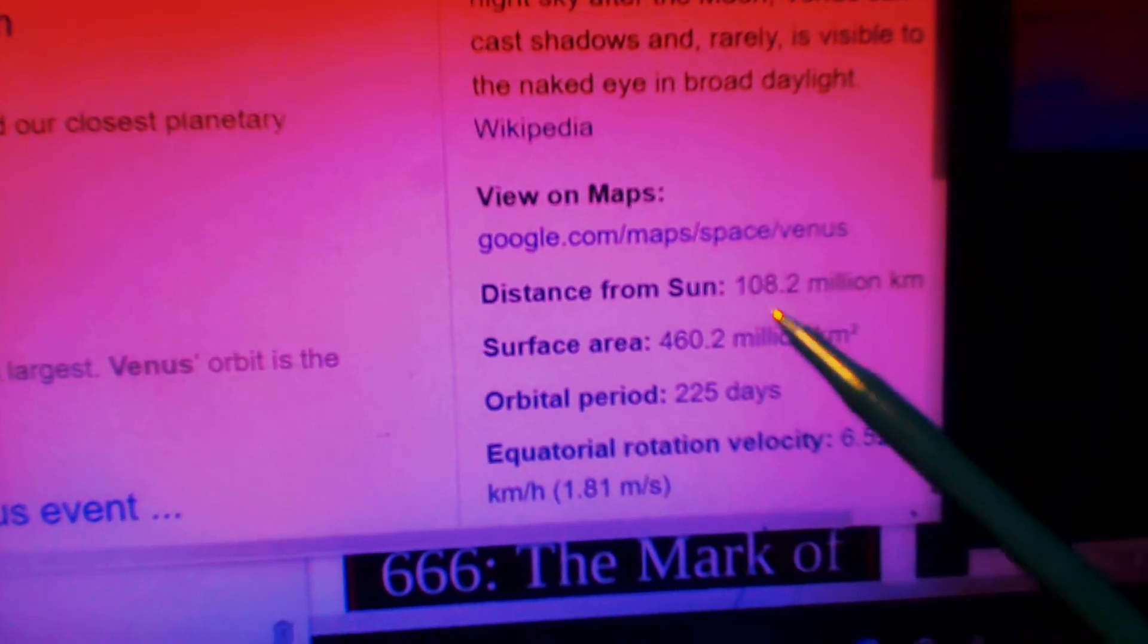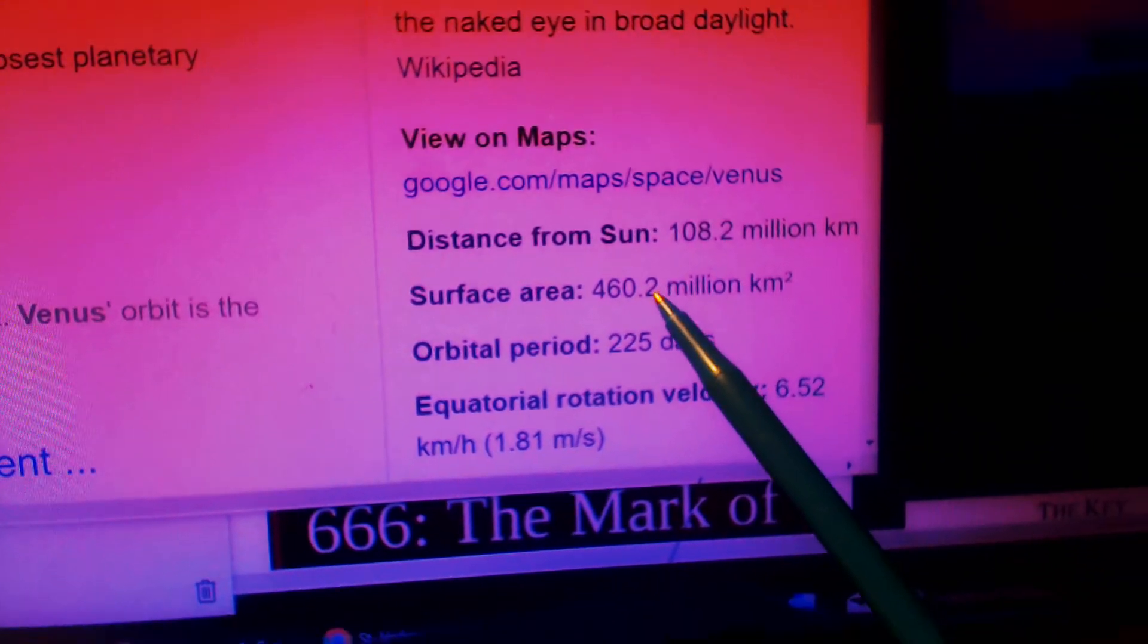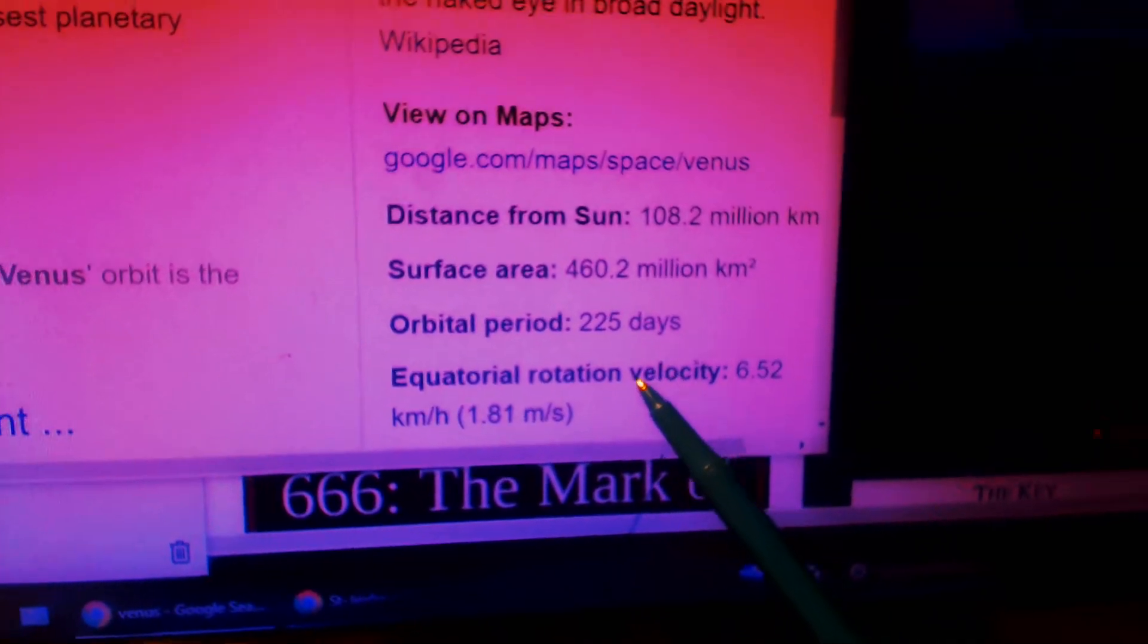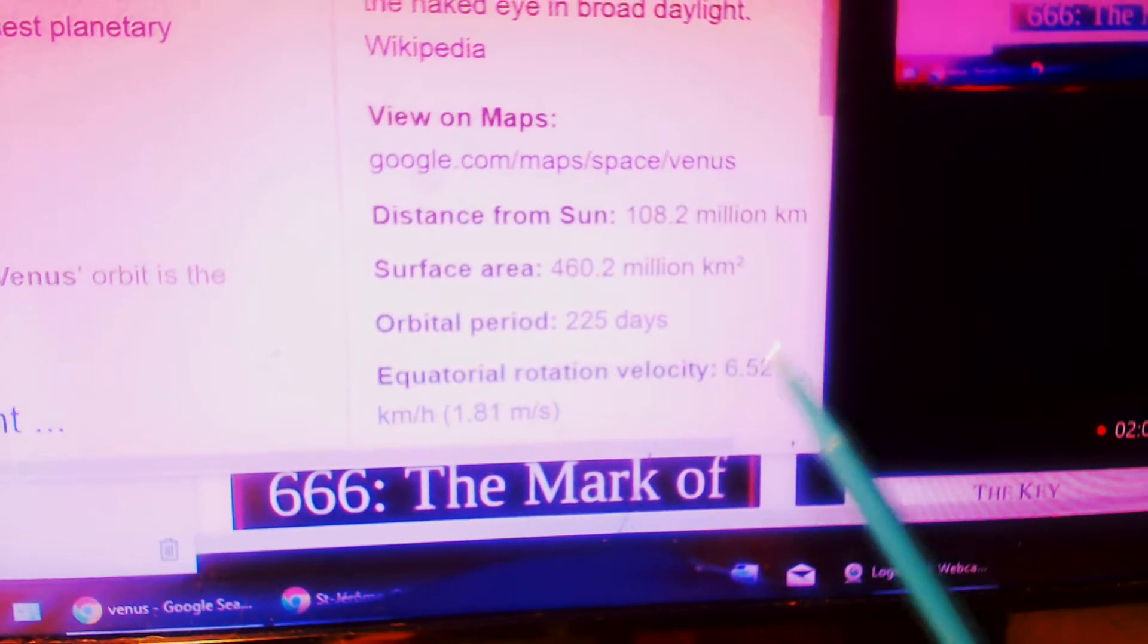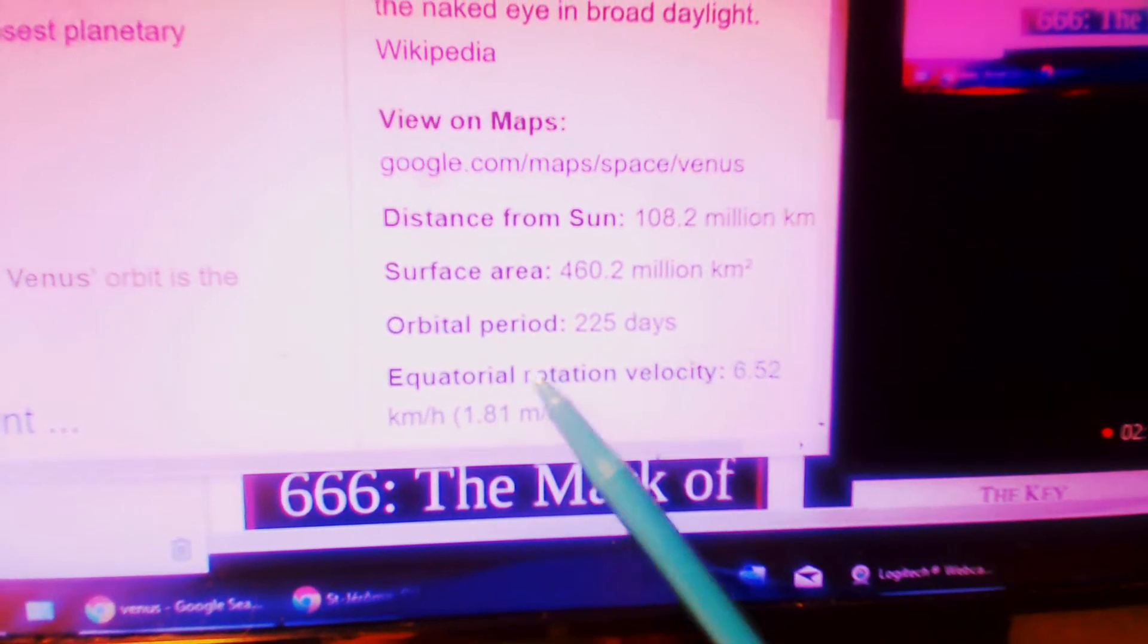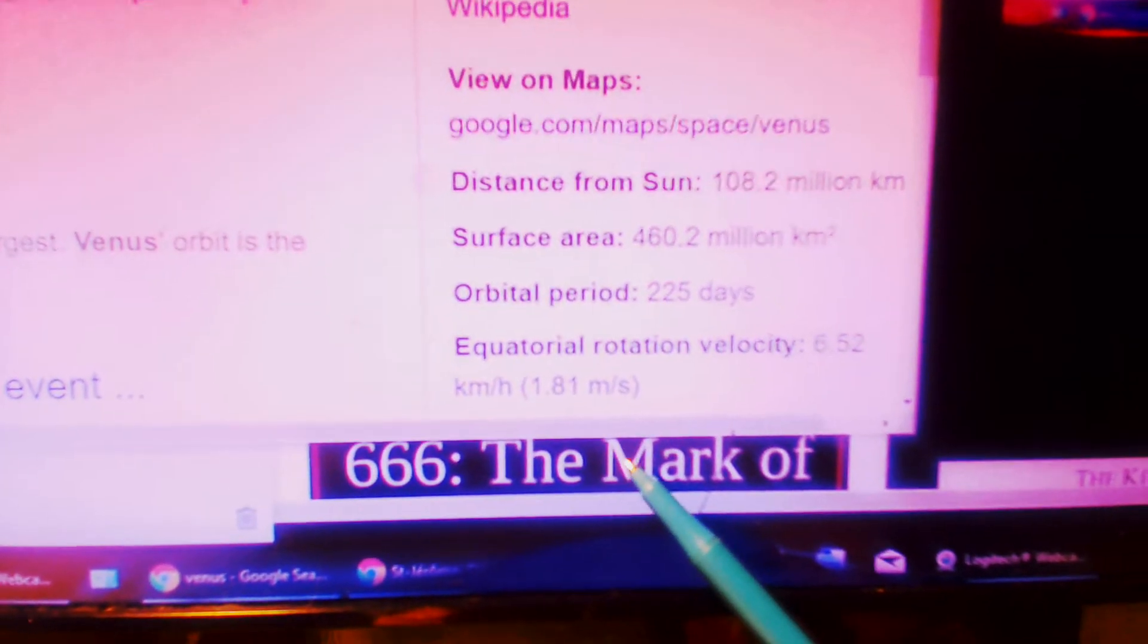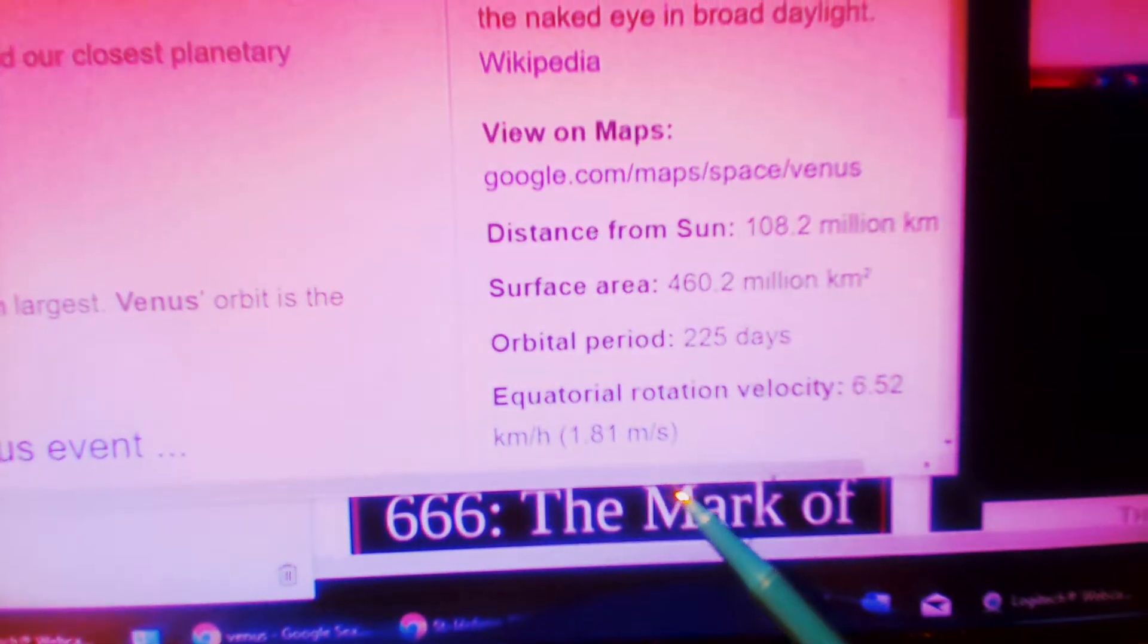To continue on, we have 108.2 million kilometers, 416 million, orbital period of 225, equal ladder of velocity, and this is to say the spirit in God of earth. So I'm not sure if this has anything. And look what underneath comes in to, I don't know why this is here. But anyways,